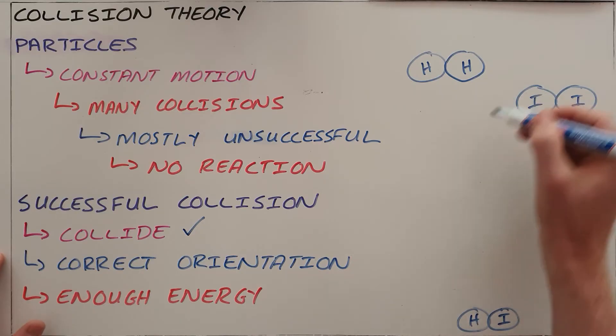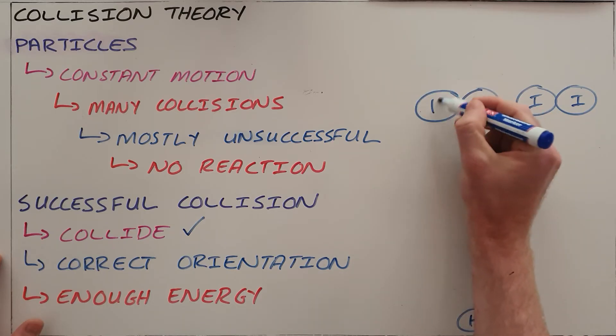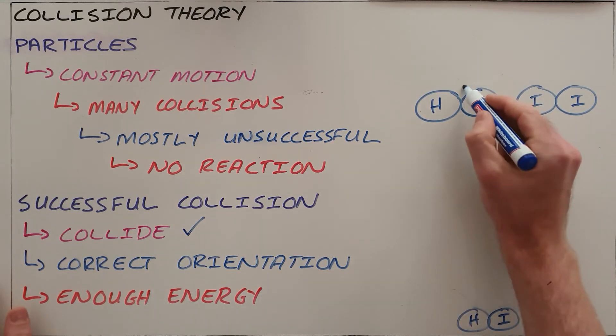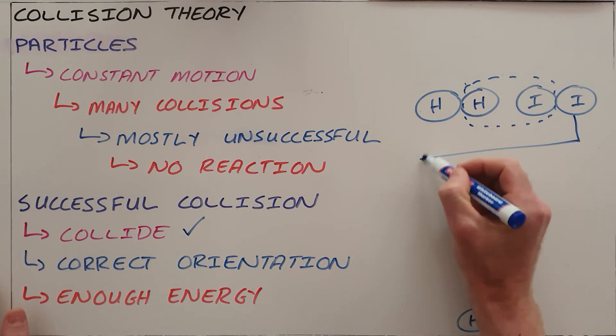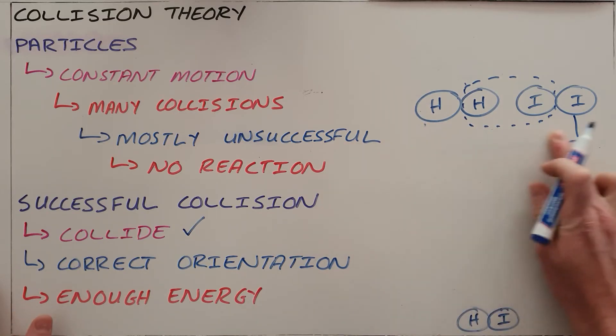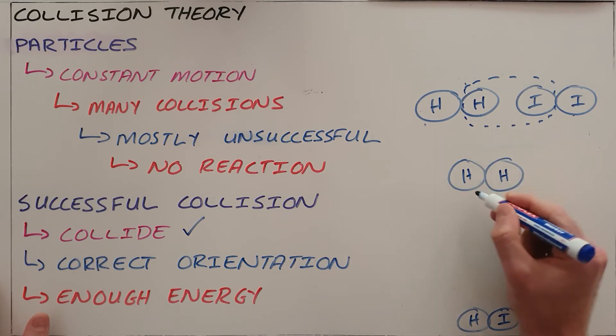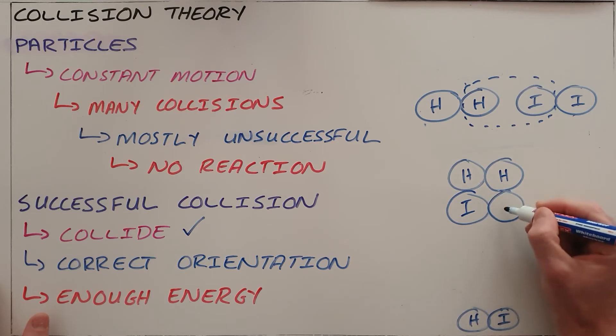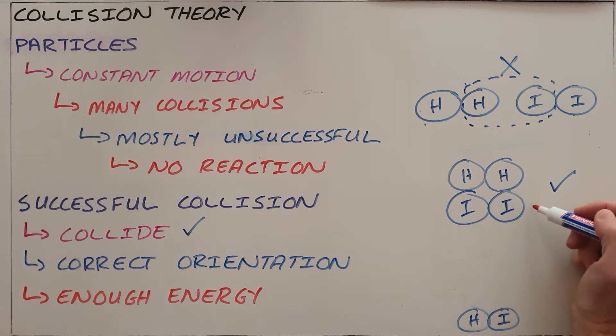As we can see here, if these two molecules are to collide in this orientation, what that would mean is that we are trying to form a bond between this hydrogen and this iodine without providing an alternative for this hydrogen and this iodine because they are not in contact. When we say the correct orientation, what we are saying is that they must collide with each other in such a way so that every atom present is able to form a new bond. This over here would be an incorrect orientation. This over here is a correct orientation. This, just for interest's sake, is called the activated complex.